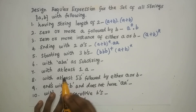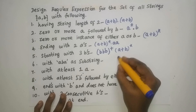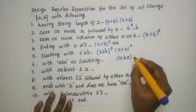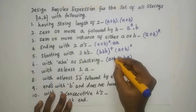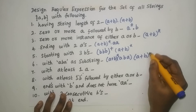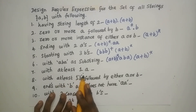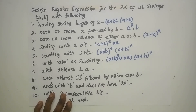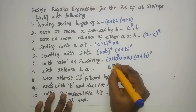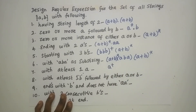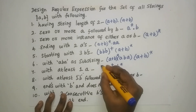Next: set of all strings over {A, B} with ABA as a substring. ABA must occur in the string, and it can be at the start, in the middle, or at the end. So before ABA you can have (A + B)*, and after ABA you can also have (A + B)*. Next: with at least 1 A — you must have at least 1 A or more in your string, so use A+. B can have any number, so you can have B* on both sides.